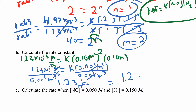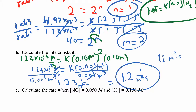Dividing both sides by 0.001 molar cubed: one of those molars cancels, leaving 1.2 one over molar squared times second. Another way to write that is 1.2 molar to the negative two times seconds to the negative one. So this is your rate constant K. It's third order overall, which means the molar units on the bottom are one less than the overall order.